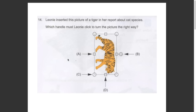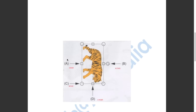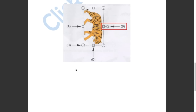This question asked us which handle must Leonie click to turn the picture the right way. Option B will rotate the picture. Option D will make the picture longer. Option C will resize the picture. Option A will make the picture wider. So the answer has to be B.